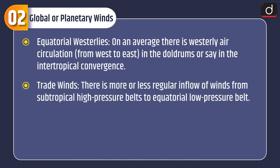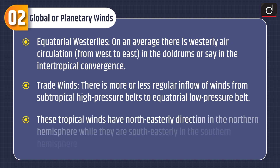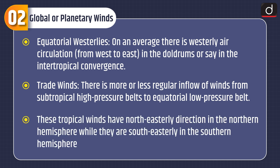Trade winds: there is a more or less regular inflow of winds from subtropical high pressure belts to equatorial low pressure belts. These tropical winds have a northeasterly direction in the northern hemisphere while they are southeasterly in the southern hemisphere.